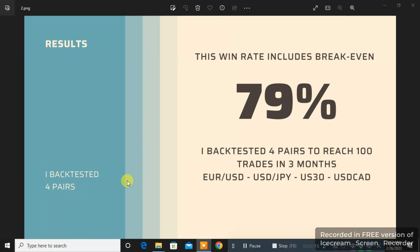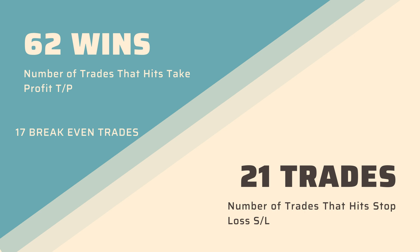This is the result of the backtesting. I backtested 4 pairs, and this win rate includes break-even trades. On break-even, I move my stop loss to break-even at 1 to 1. I'm not using structure to move my stop loss — I want to make it as simple as possible. It ended up bringing a 79% win rate: wins were around 60%, break-evens around 19% to 20%, and losing trades around 21%. Although there are some things I could have done to avoid some losses, I stuck to the backtesting plan to get the most transparent results possible.